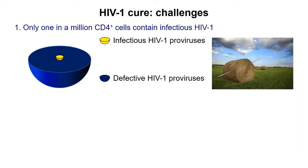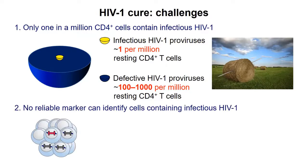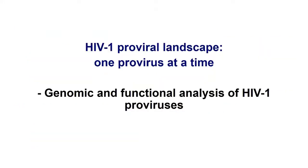This is not an easy task. There are challenges. The first challenge is that there's only one in a million CD4 T cells which contain infectious HIV — these are the cells we want to target, but they're just so rare. Around 100 to 1,000 per million CD4 T cells contain defective HIV. And there's no marker which can identify these two cell populations separately or distinguish them from uninfected cells. Therefore, we don't know how to target them.